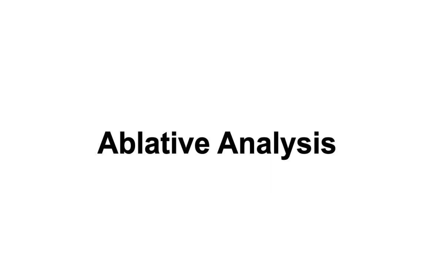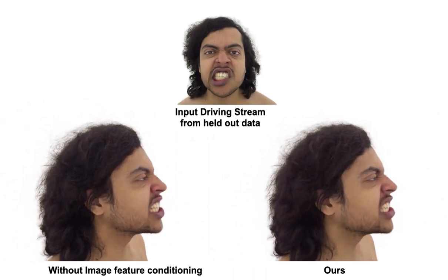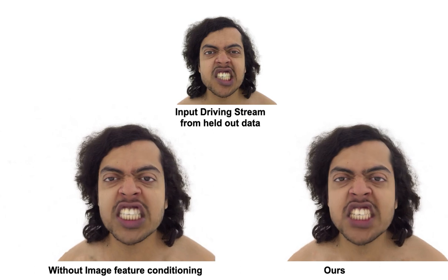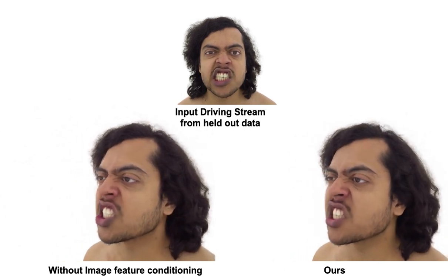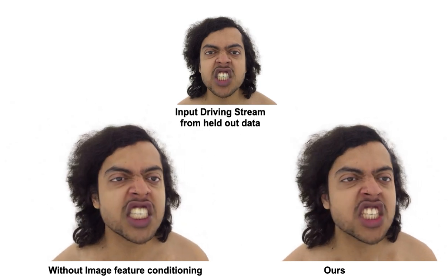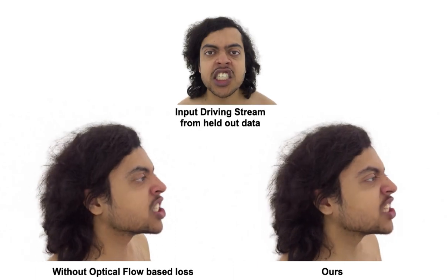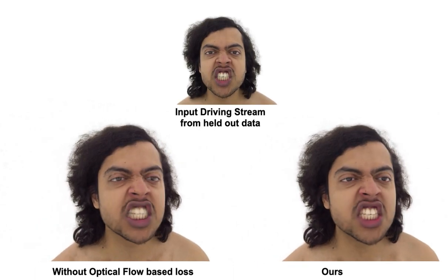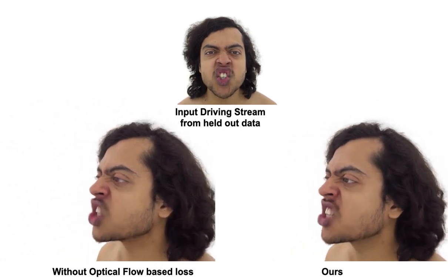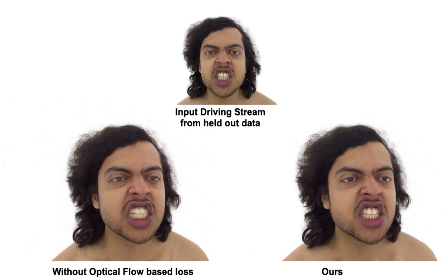We show the critical design choices of our approach. We show the result of conditioning the canonical radiance field network on features obtained from the image encoder, which leads to blurry results in the mouth region without proper design. We highlight the impact of using an optical flow based loss, which helps produce temporally stable and artifact-free rendering in regions such as the eye and the mouth.